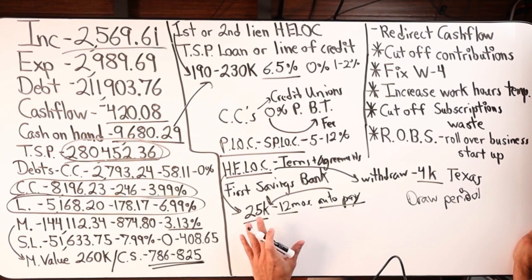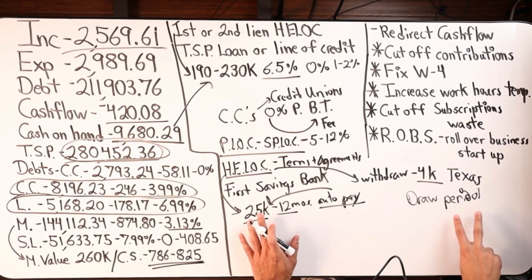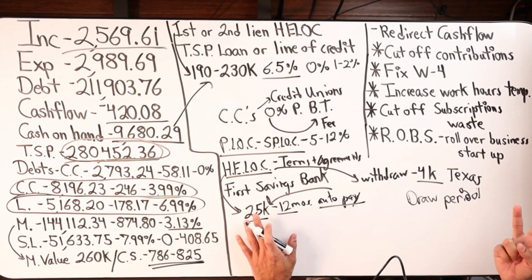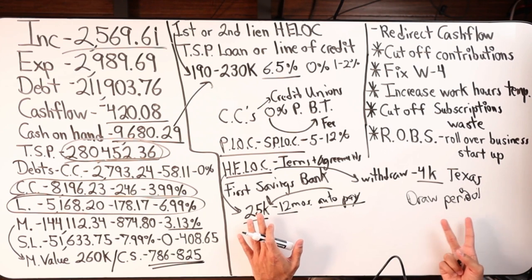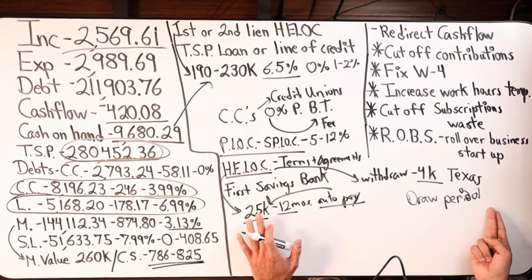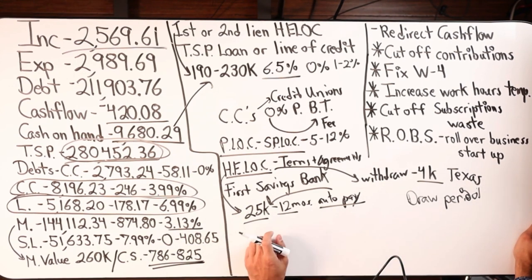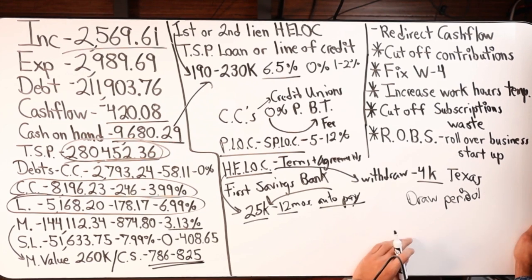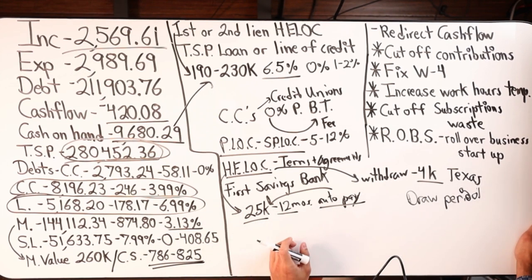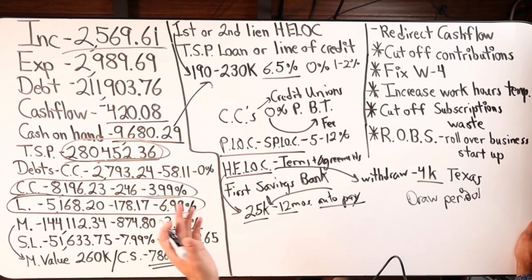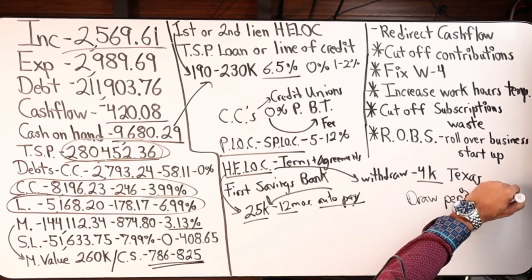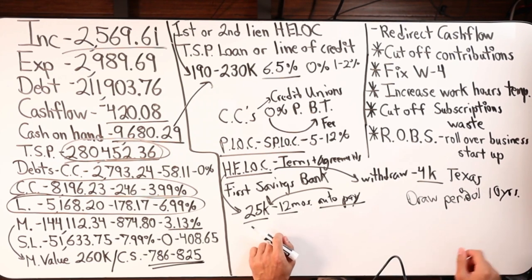The draw period is the period you can take money in and out of the line of credit. Once the draw period is over, it goes from simple interest to amortized — the last thing you want is an existing balance when the draw period expires and it converts to an amortized fixed loan. With velocity banking our timeline is typically five to seven years or less to become completely debt free. If you have a ten-year draw and you're debt free in five to seven years, you've got additional years to step into the investment and debt leveraging world to accumulate cash flow.